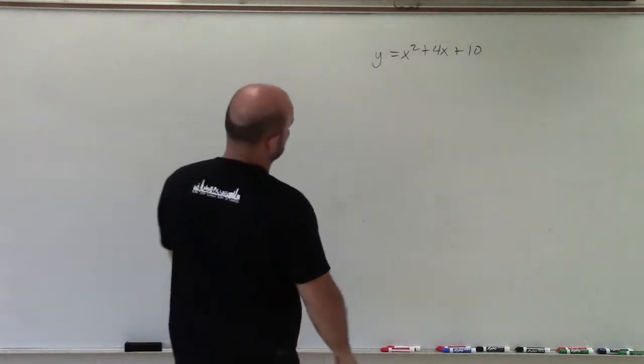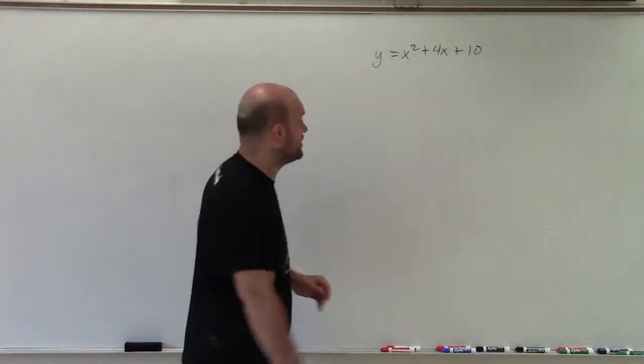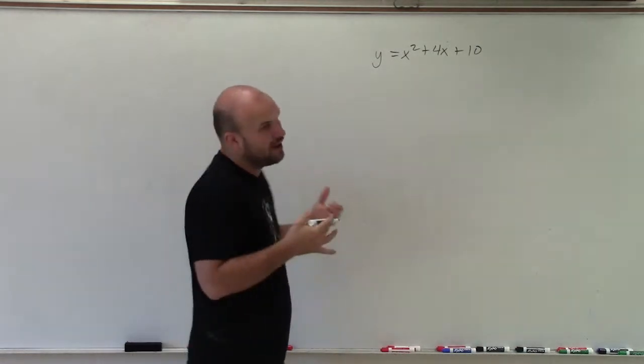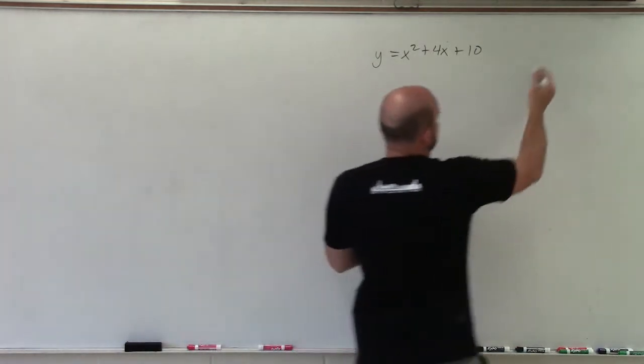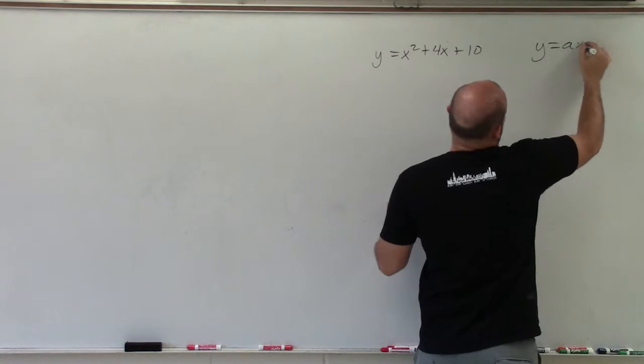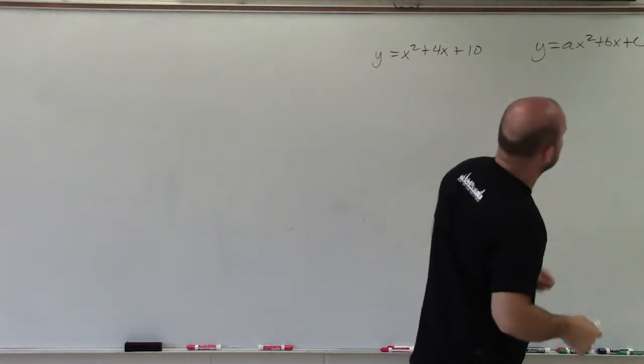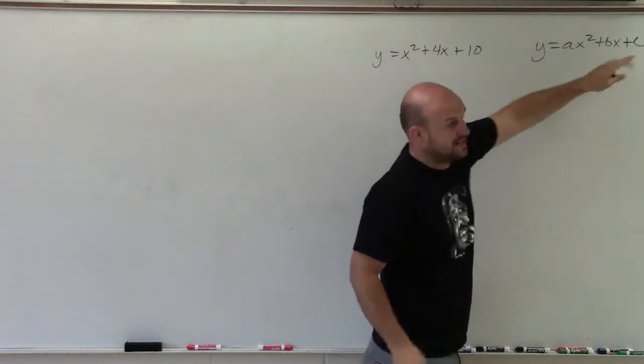Going through our step-by-step process for completing the square, the first thing we want to do is make sure we understand the steps. To do that, we first want to know what everything means in standard form, and you have a, b, and c.